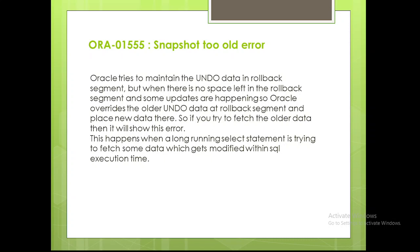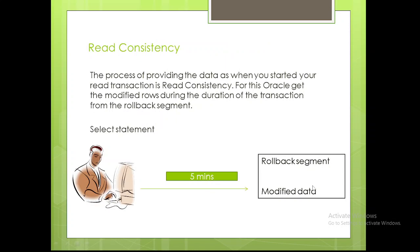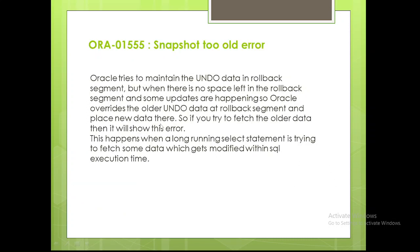Oracle tries to maintain the undo data in the rollback segment — I have already discussed that in a previous video. The undo data is maintained in the rollback segment, which is managed by the undo tablespace. But when there is no space left in that rollback segment — if this segment is full — what is going to happen?